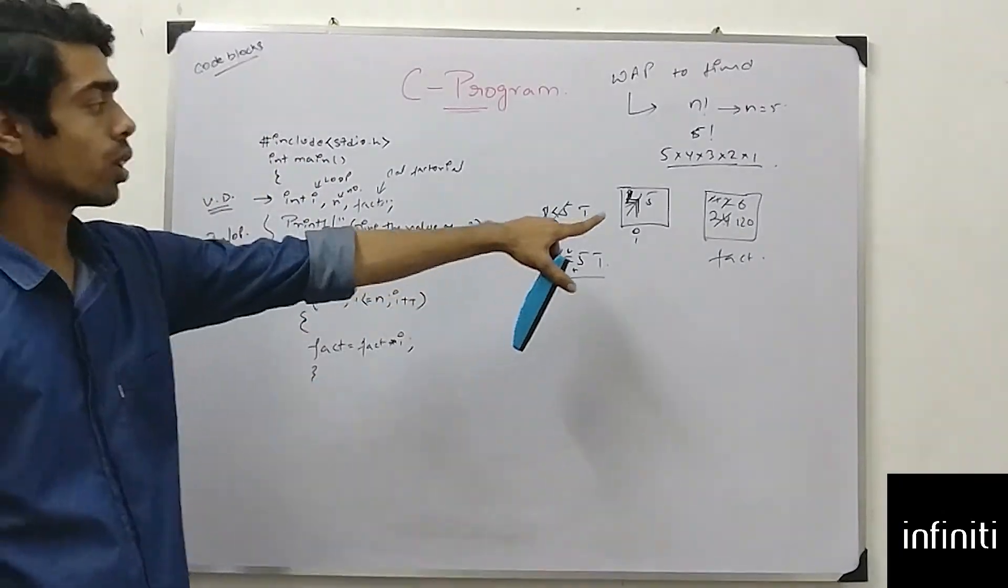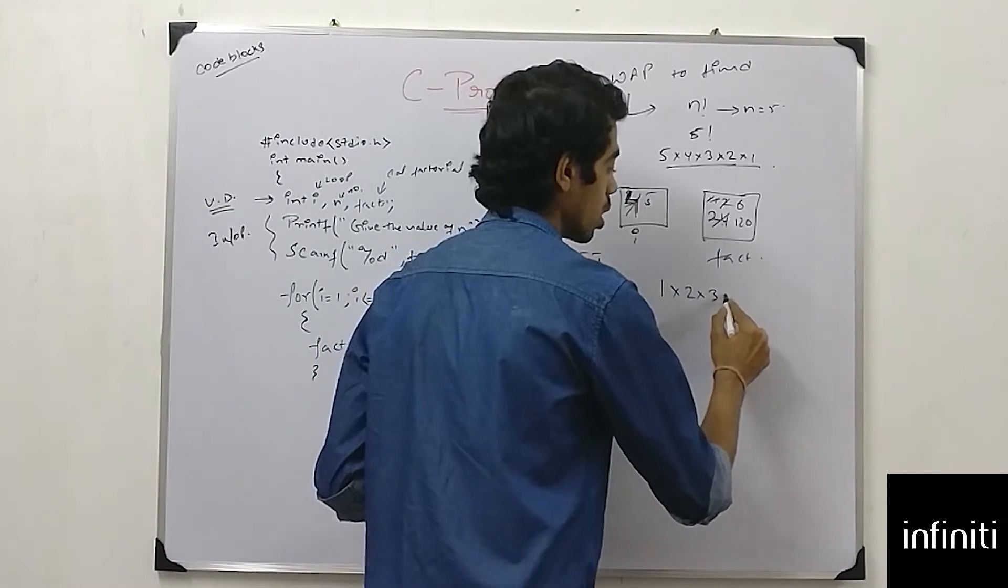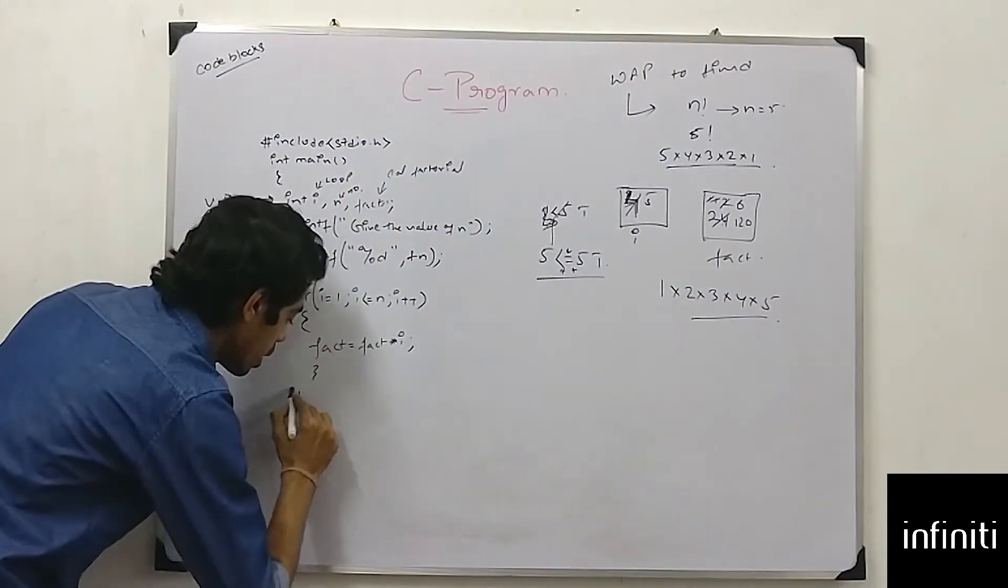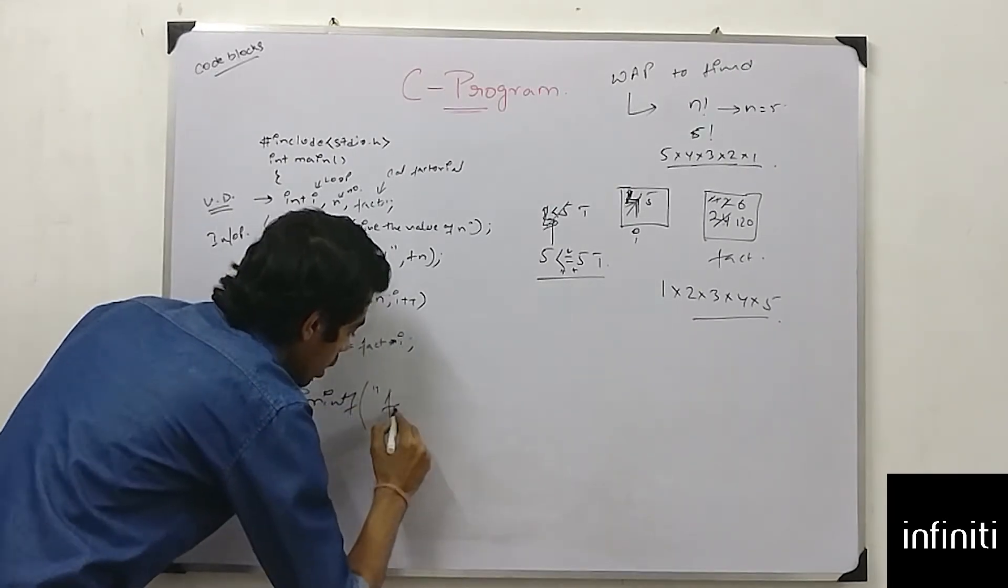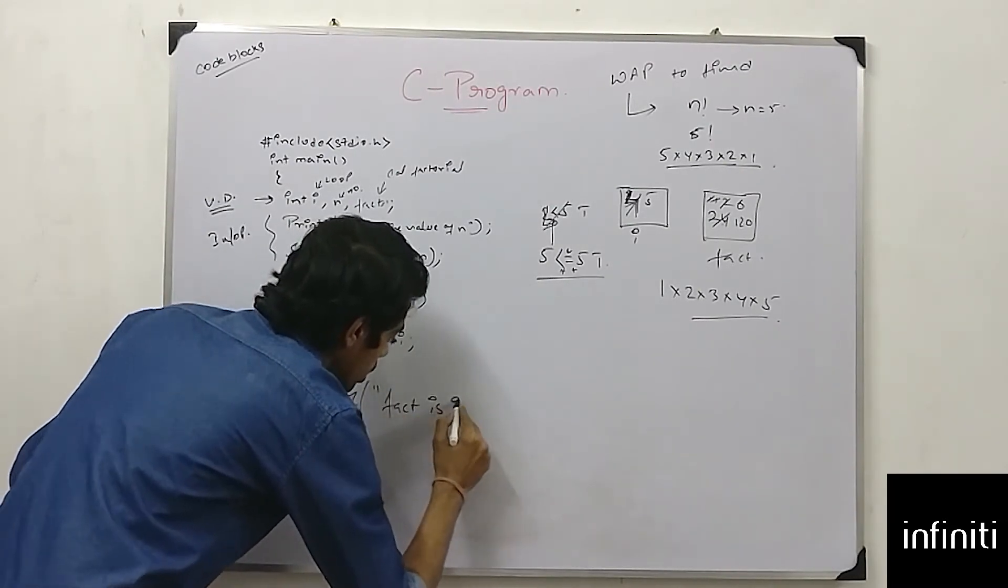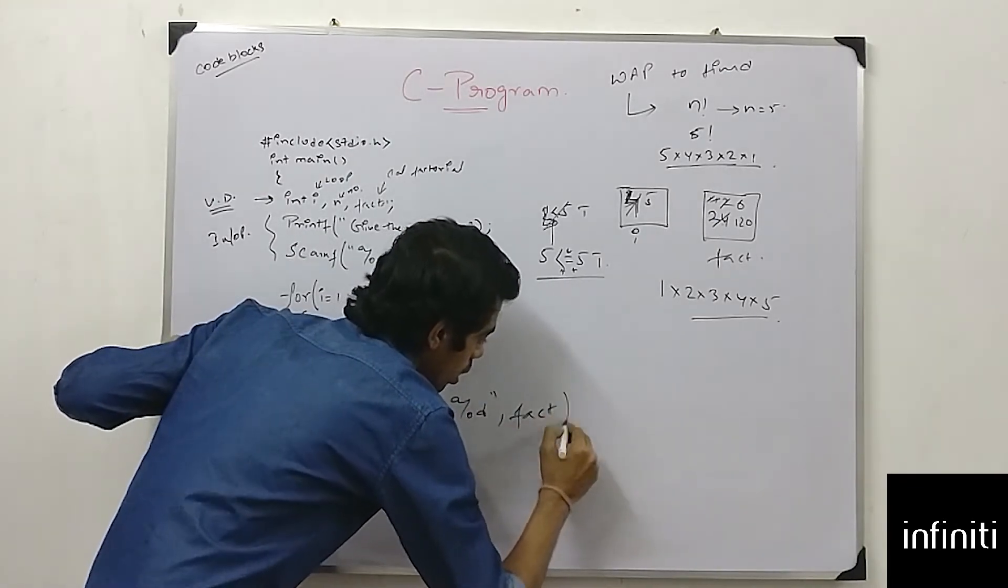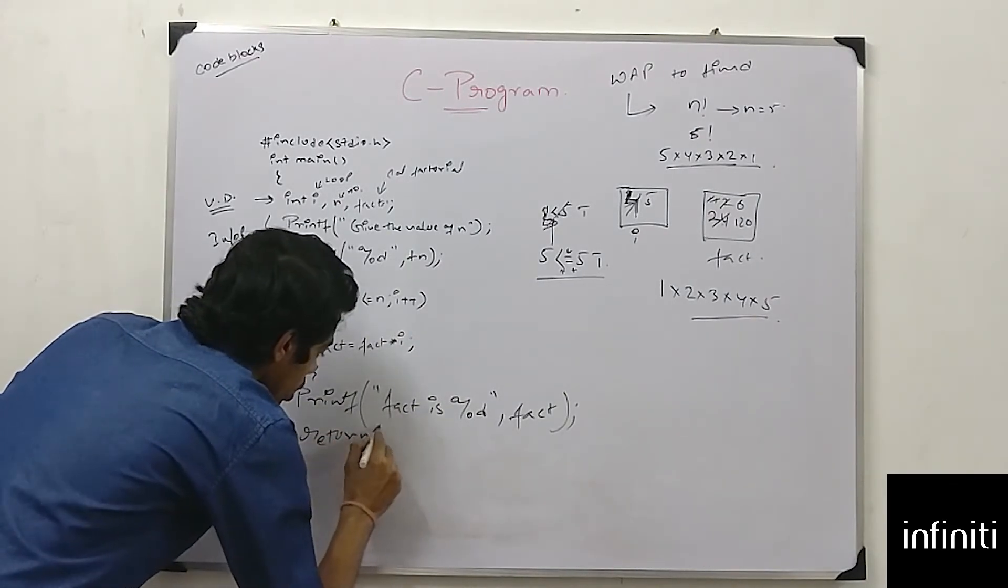So I have got my factorial. Like 1, 2, 3, 4, and 5. And I will print my factorial. printf fact is, percentage d, comma, fact.